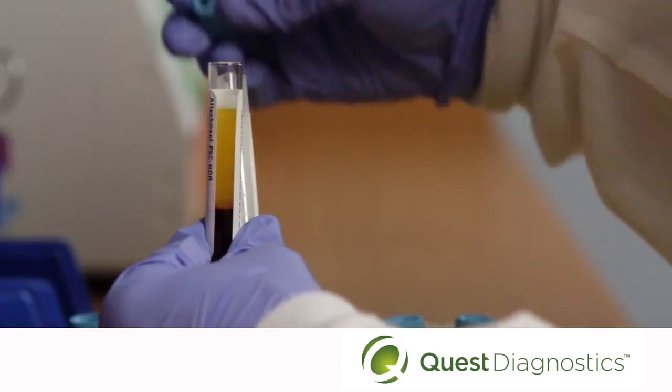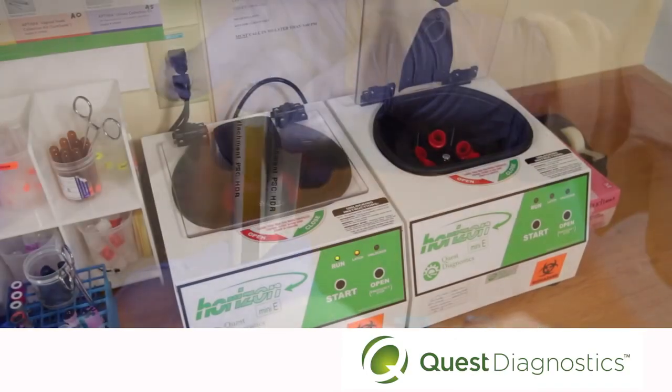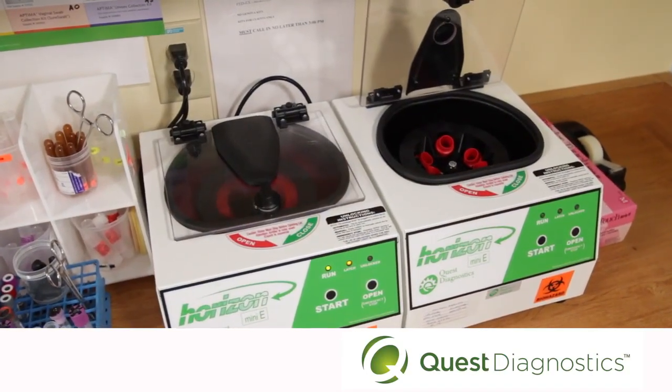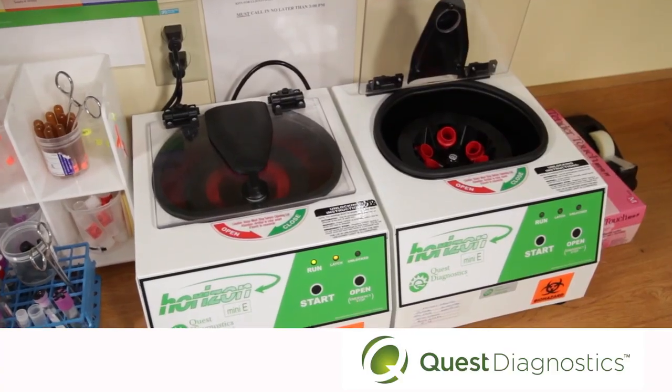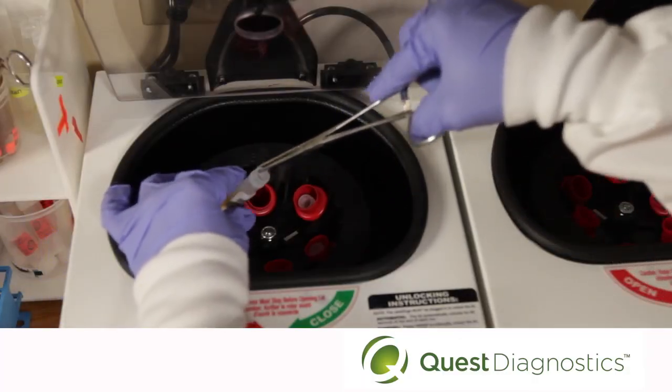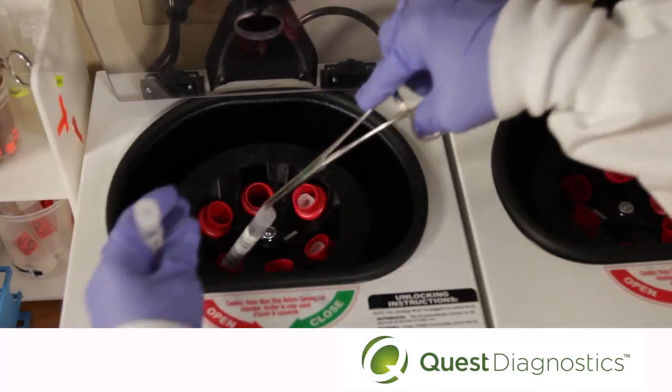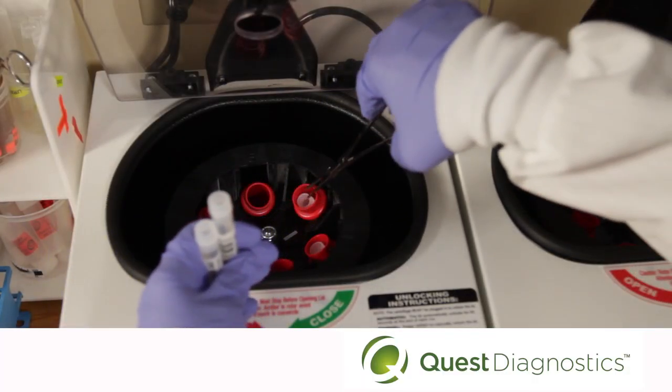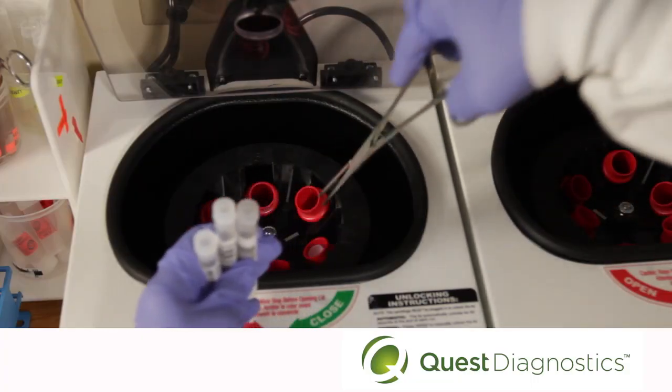There are no shortcuts in creating platelet-poor plasma. It is important that you perform a second spin even if your plasma looks good to the naked eye after the first spin. Failure to spin the plasma a second time will result in too many platelets in the plasma, which interferes with testing.